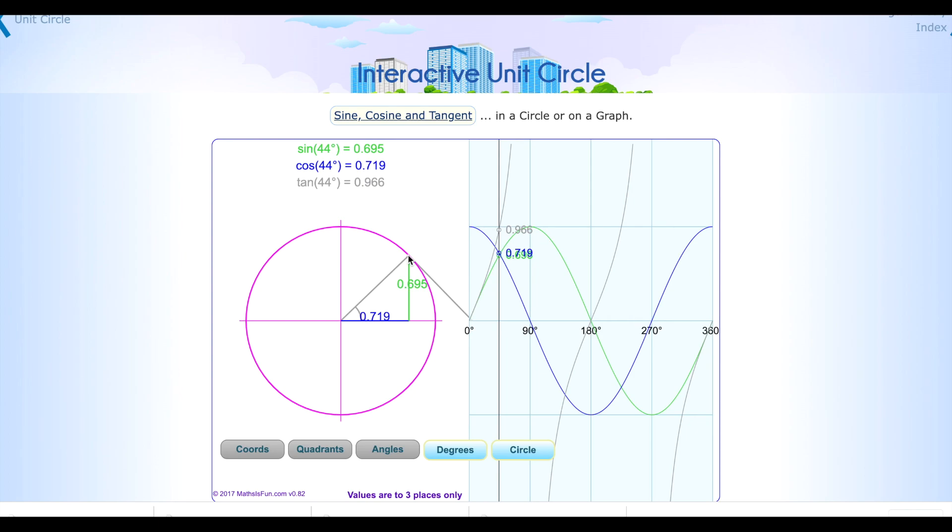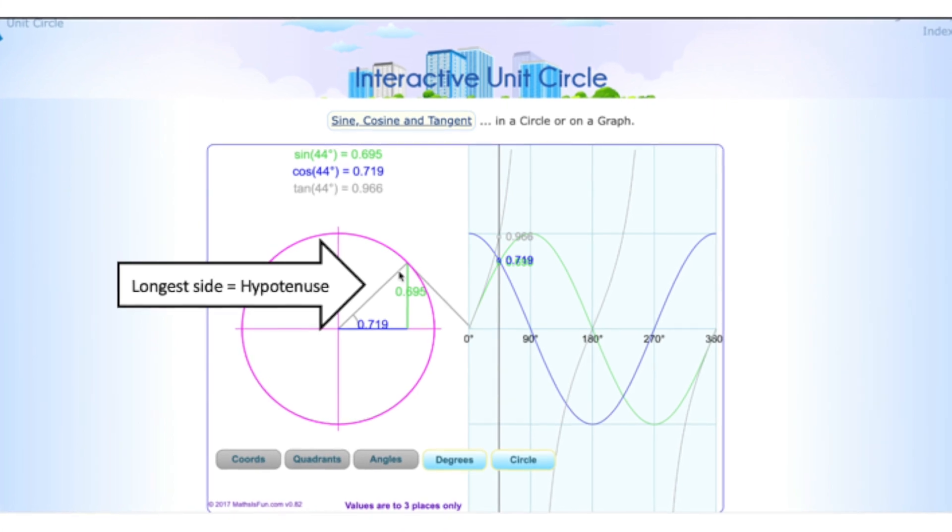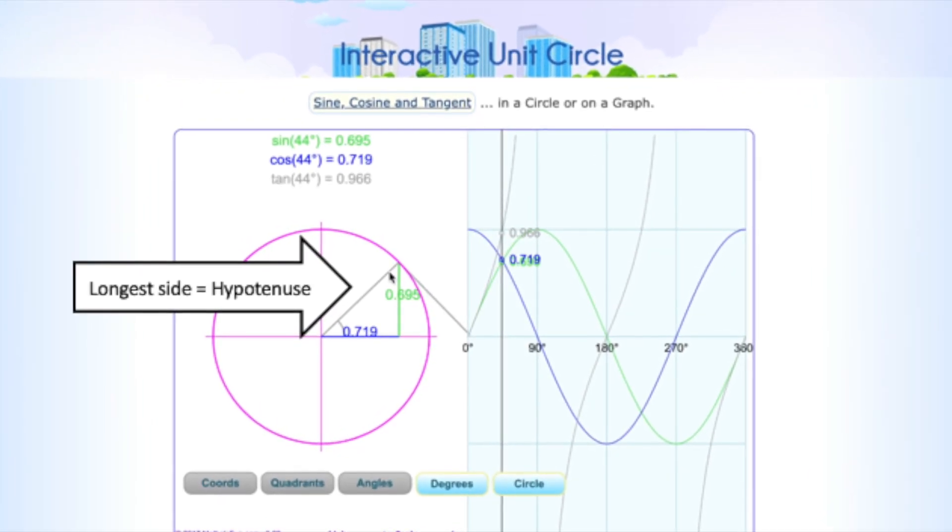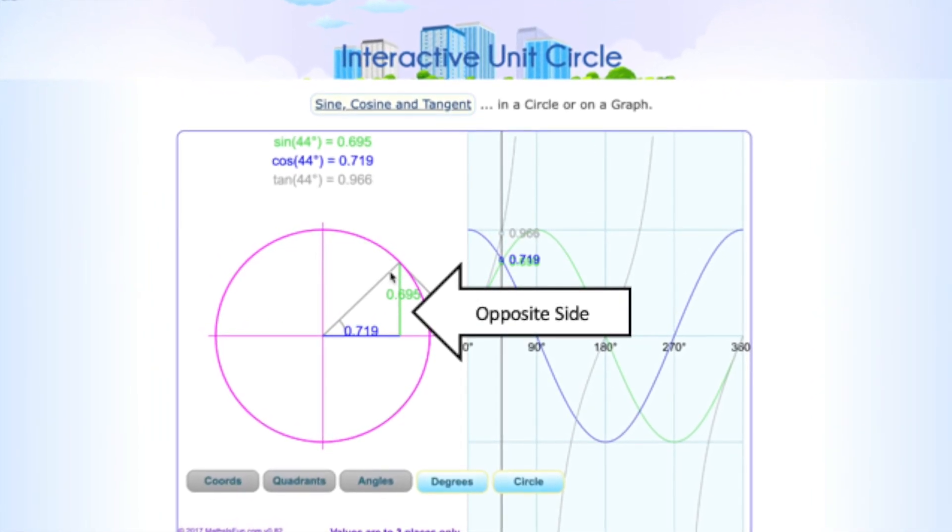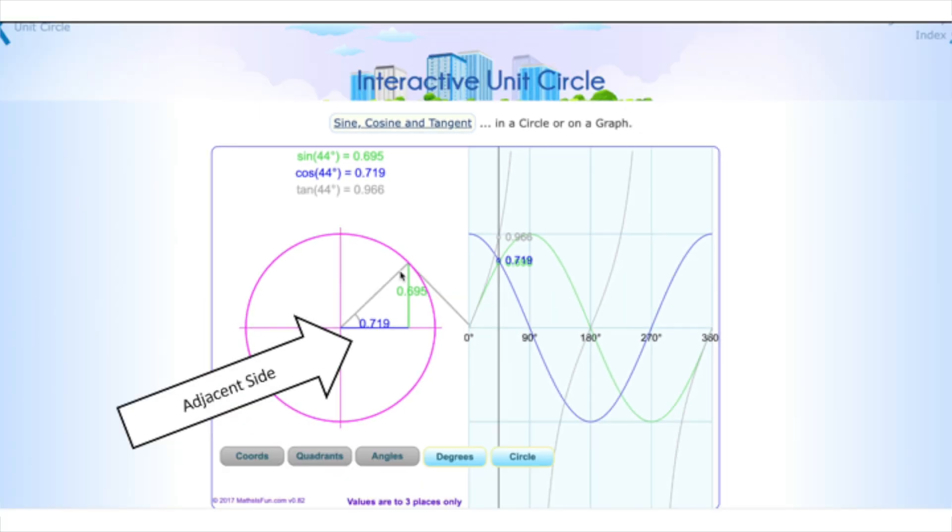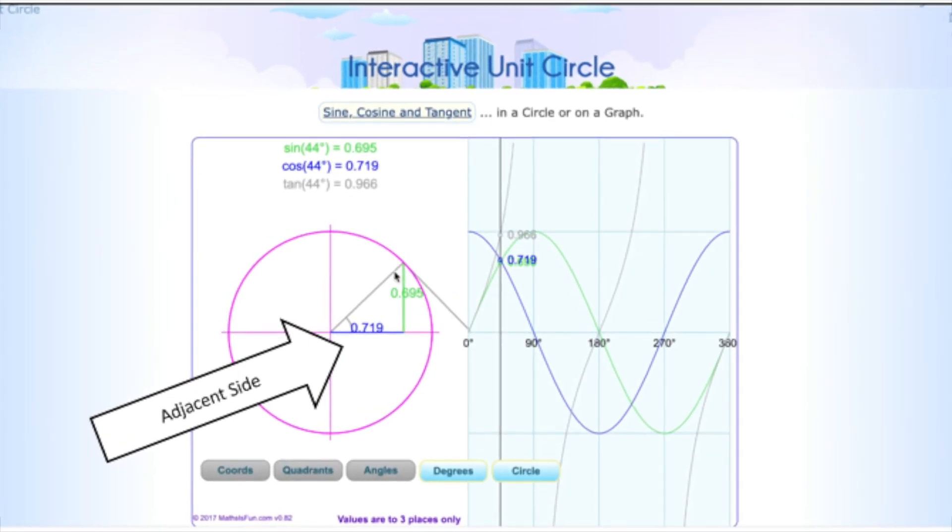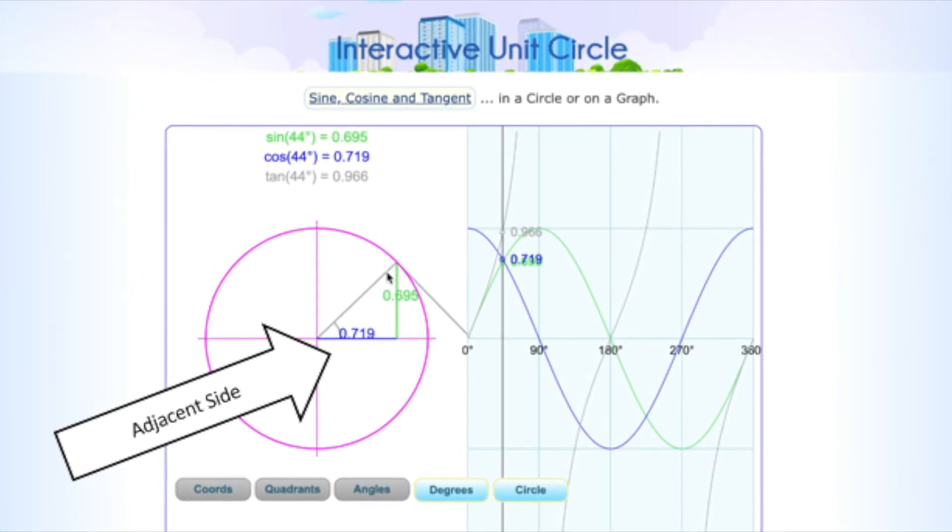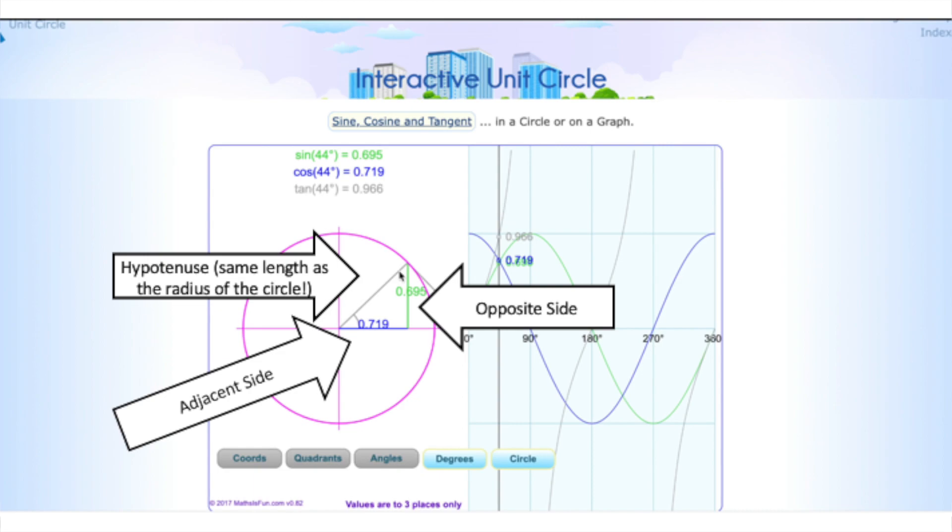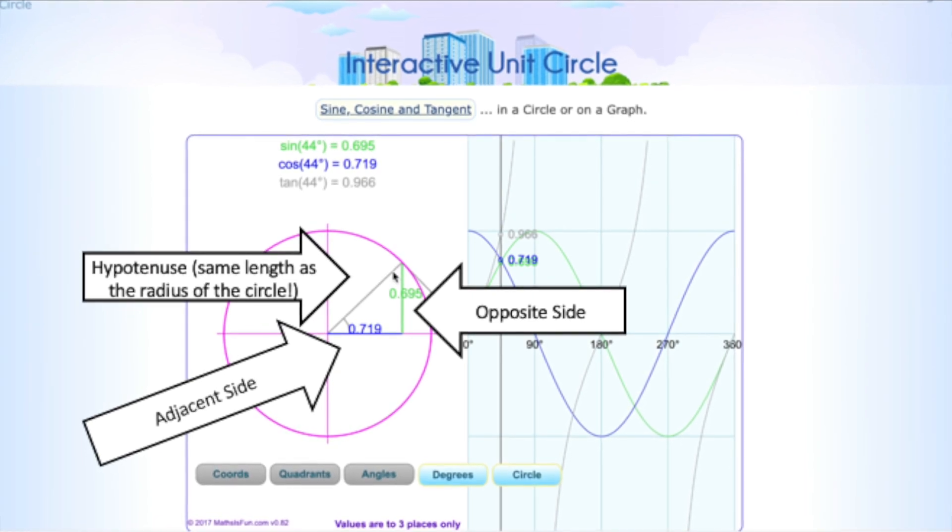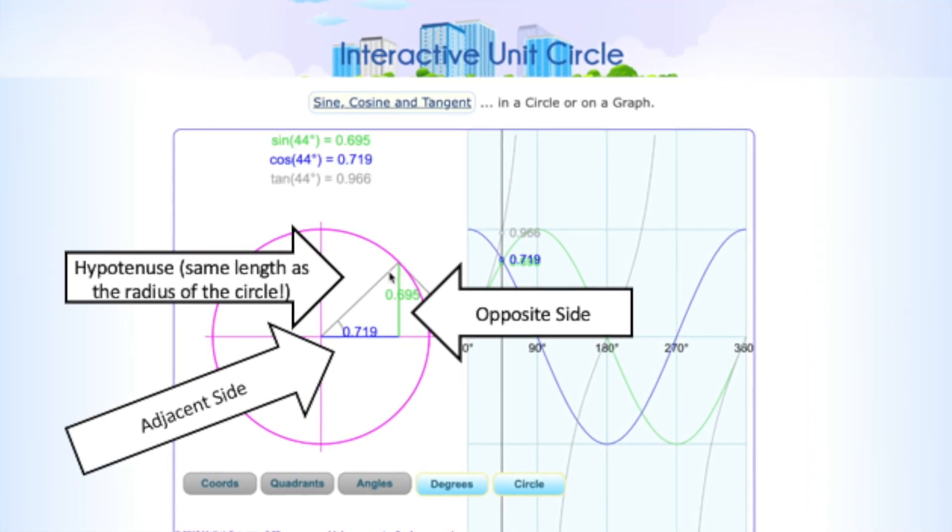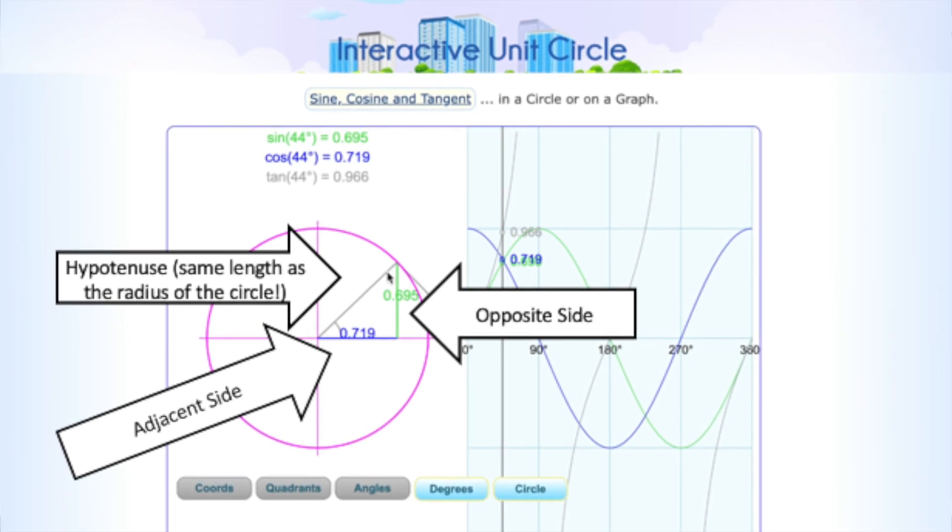So what does that really mean? So first of all we've got the gray line which is the radius, that gray line always stays the same length and in a right-handed triangle like this that is the longest side of the triangle and it is known as the hypotenuse. The green edge that you can see at the green side of the triangle there is known as the opposite side, and the blue side at the bottom is known as the adjacent side. So we have the opposite side because it's opposite to the angle, and we have the adjacent side because that is next to the angle, that is the blue one, and we have the hypotenuse which is the longest side which is the gray one pointing up to the outside.